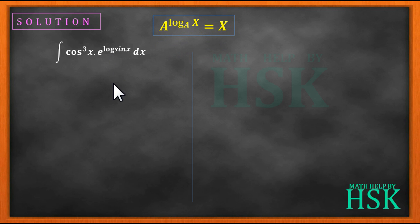Let's start solving this question. First of all, we know that e to the power of log sine x, where no base is given, means that the base is e, which is equal to sine x.